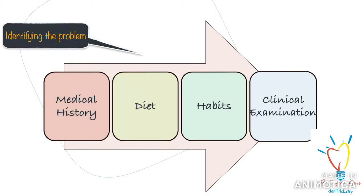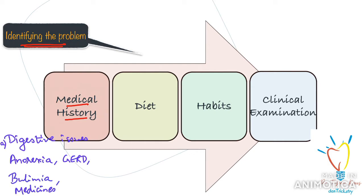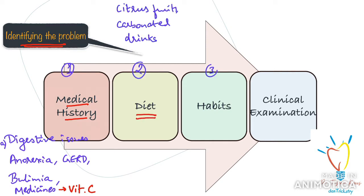Before we get into the details, what is the first thing you need to do when you have a patient with a complaint of these lesions? Step one is to identify the problem and the cause, because that will eventually determine your treatment plan. First is the detailed medical history of the patient. Your job as a dentist is to rule out any digestive issues like anorexia, bulimia, or gastric regurgitation. Certain medications like vitamin C tablets are also responsible for erosion. So ask your patients for a detailed medical history.